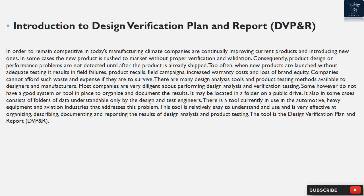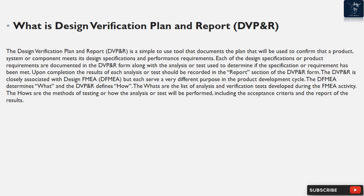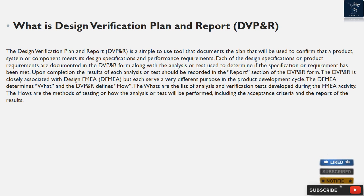The tool is the design verification plan and report, DVP&R. The DVP&R is a simple-to-use tool that documents the plan that will be used to confirm that a product, system, or component meets its design specifications and performance requirements. Each of the design specifications or product requirements are documented in the DVP&R form, along with the analysis or test used to determine if the specification or requirement has been met. Upon completion, the results of each analysis or test should be recorded in the report section of the DVP&R form.